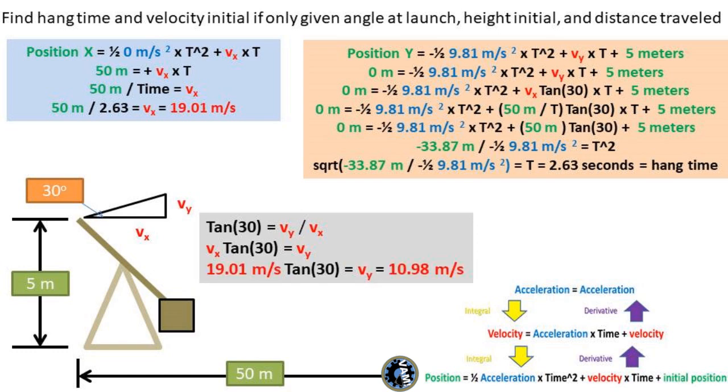Now, to find the velocity in the y direction, we can plug the v sub x into the tan of 30 formula. We get a velocity in the y direction of 10.98 meters per second.